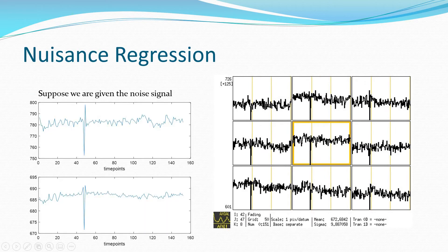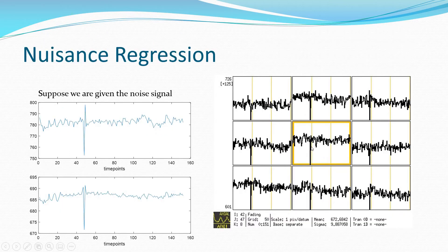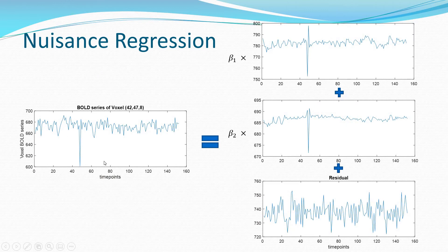The answer to how we can remove this is by nuisance regression. What nuisance regression does is: suppose we are given with the noise signal — say you have two noise signals that correspond to this data. This is given to you for now. So these are two noise signals. This is the original BOLD time series of this particular voxel, which is nothing but this center voxel.